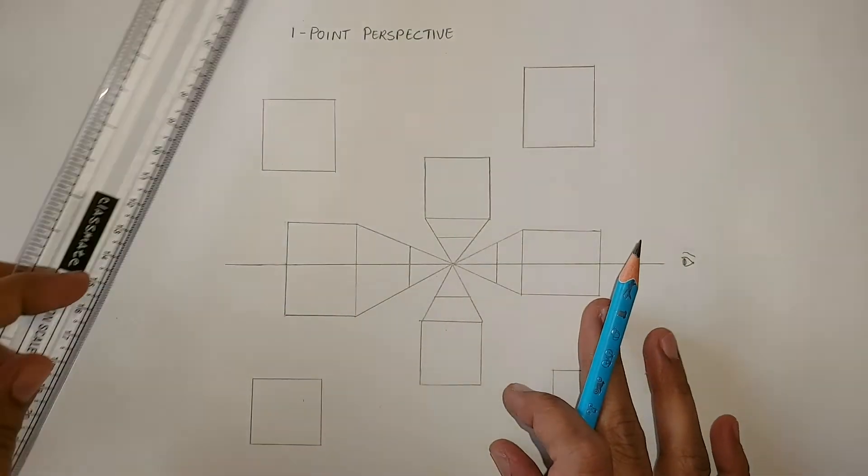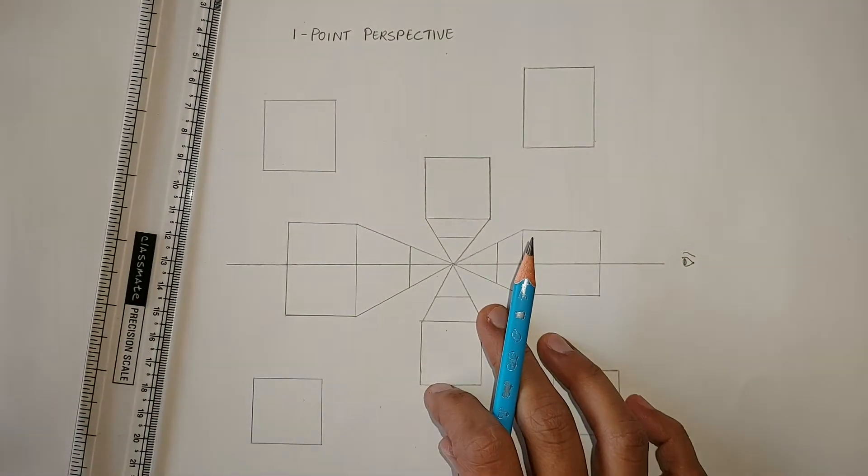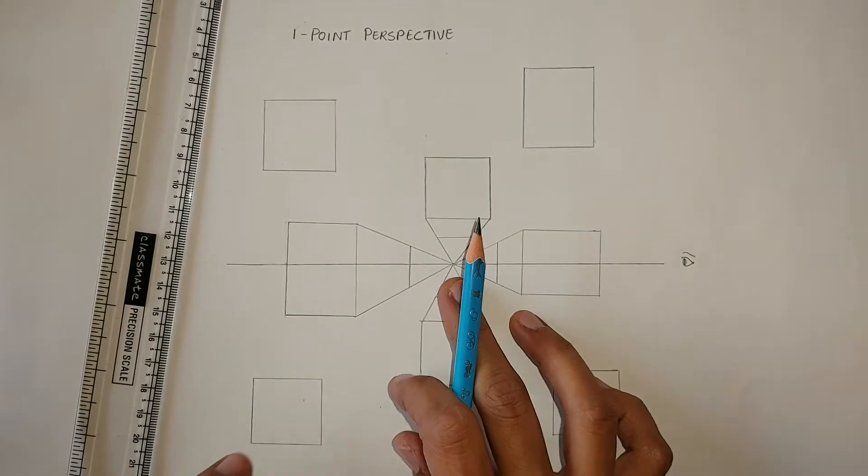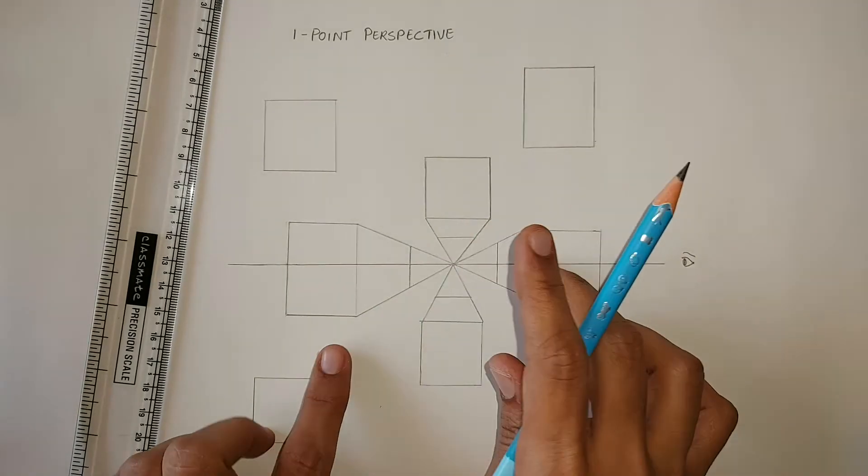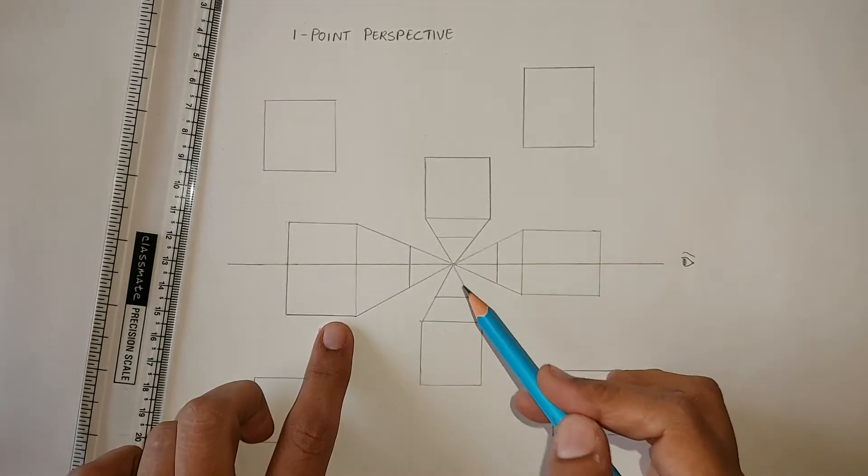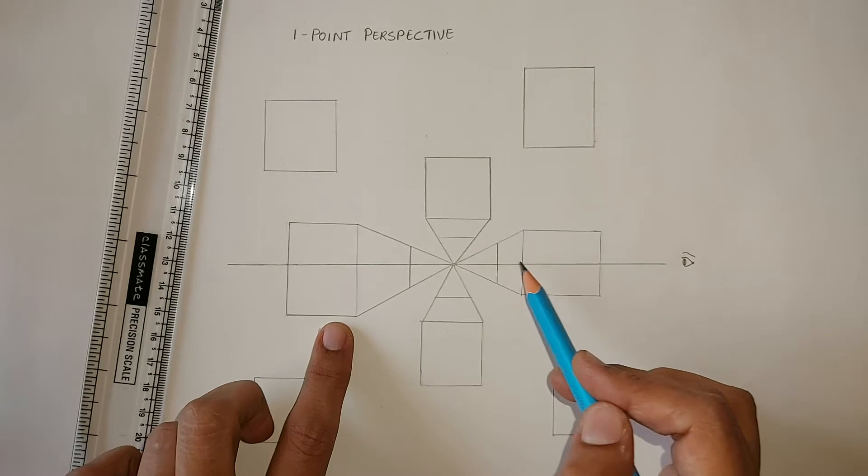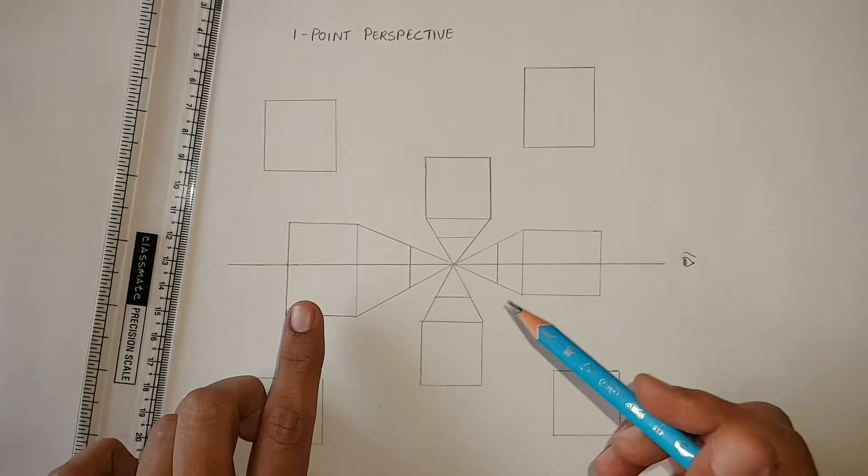If you notice, these four cubes here show up with only two sides. Remember anything that is above or below or on sides of the vanishing point would give you the view of two sides of an object.